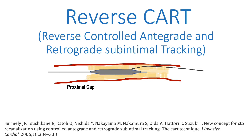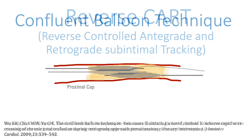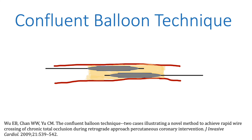In reverse CART, a balloon is utilized from the antegrade approach to allow a retrograde wire to cross the CTO. In the confluent balloon technique, an antegrade and a retrograde balloon are advanced into the CTO in close proximity to each other, inflated and deflated to create a new channel through which wire crossing can then be attempted.